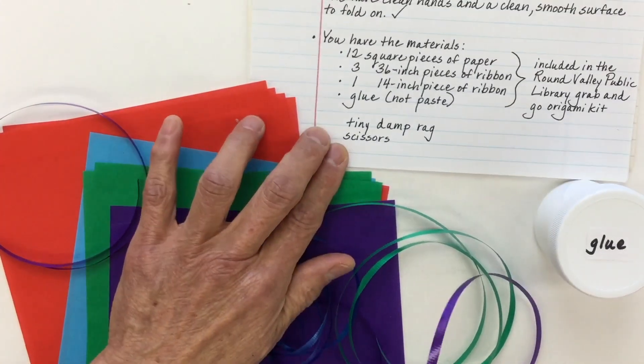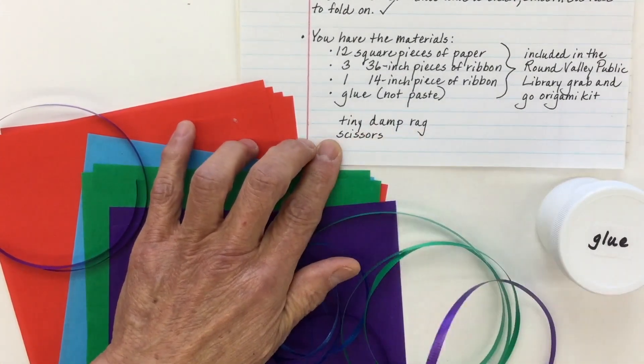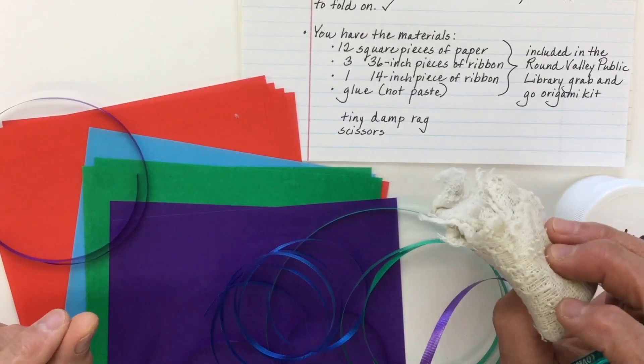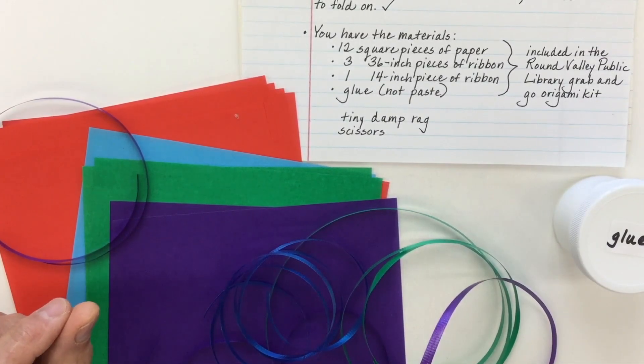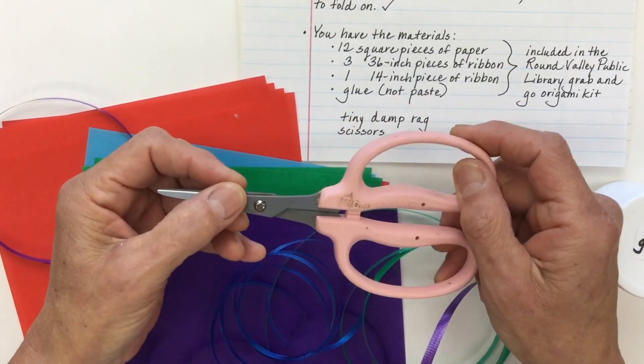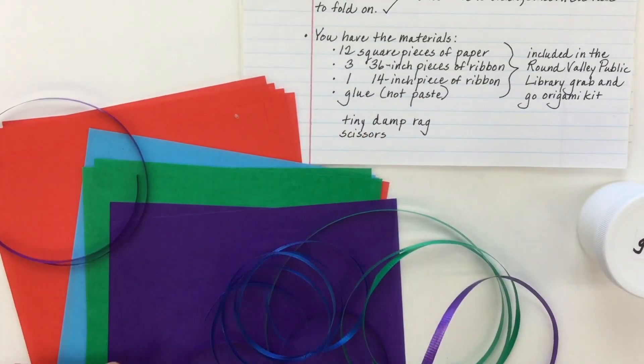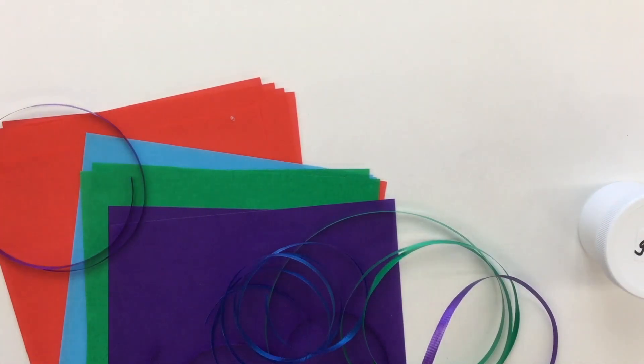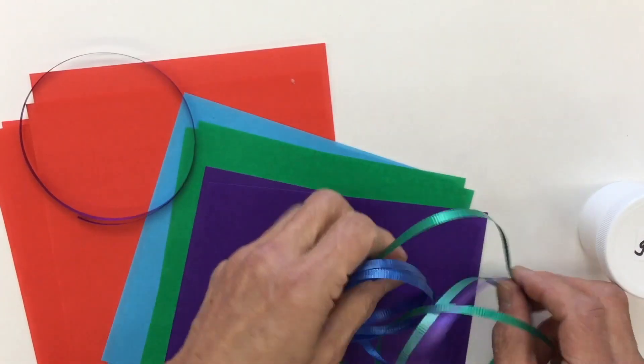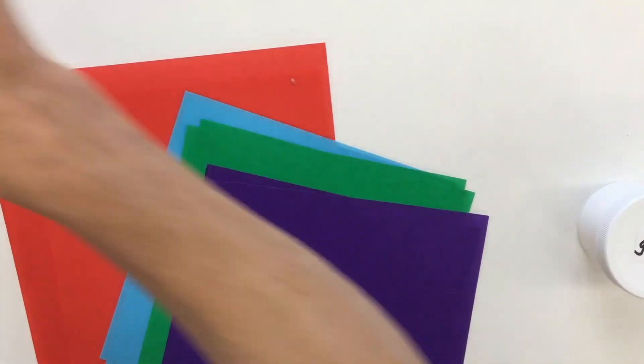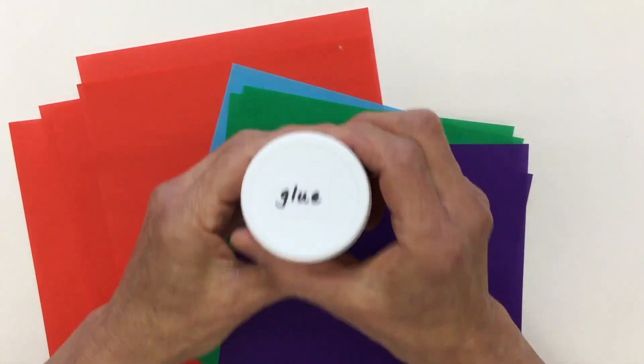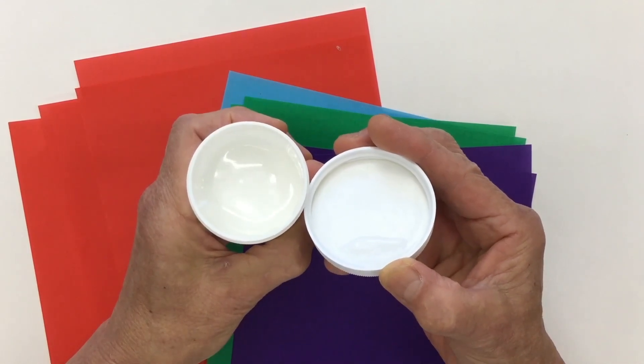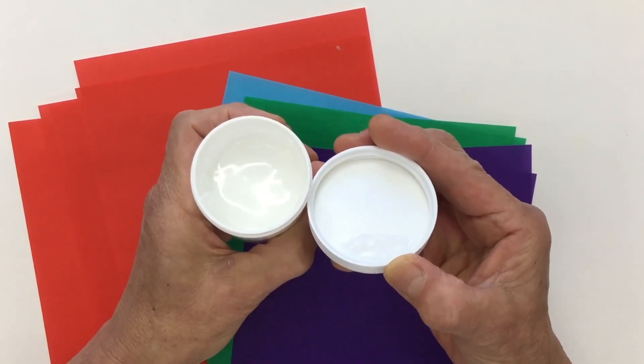There's a couple of other things that can be helpful. A tiny, damp rag. Just make certain that this tiny, damp rag does not touch any paper. And you might also find that scissors is helpful too. But these two things are optional. Let's put aside the ribbon and the glue for now. But this is a good time to open the jar of glue because we would like the glue to get a little bit tacky.